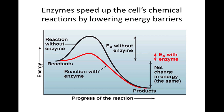There is an energy barrier that must be overcome before a chemical reaction can begin. The energy of activation is the amount of energy needed to push the reactants over an energy barrier so the downhill part of the reaction can begin. In this graph, we want to go from point A to point B. Without an enzyme, the energy of activation is much higher than with an enzyme. Enzymes speed up a reaction by lowering the energy of activation barrier.